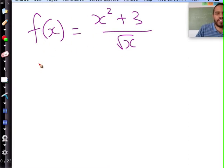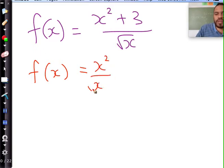This is more like a rational function, so we need to put that in a form that is nice for us. When you have many terms over one term, you can write each term over that. So it's x squared over square root x plus 3 over square root x.